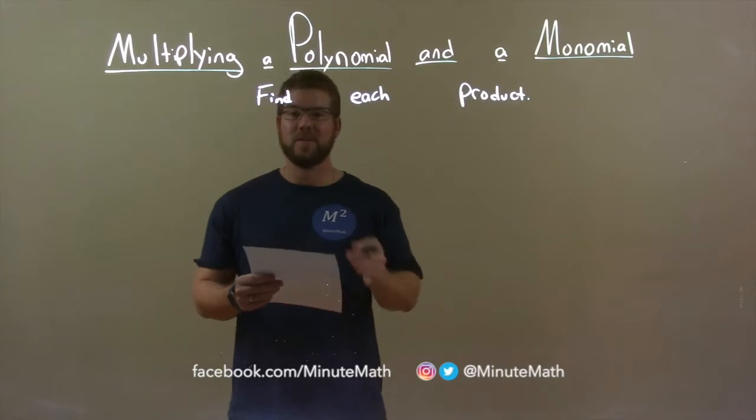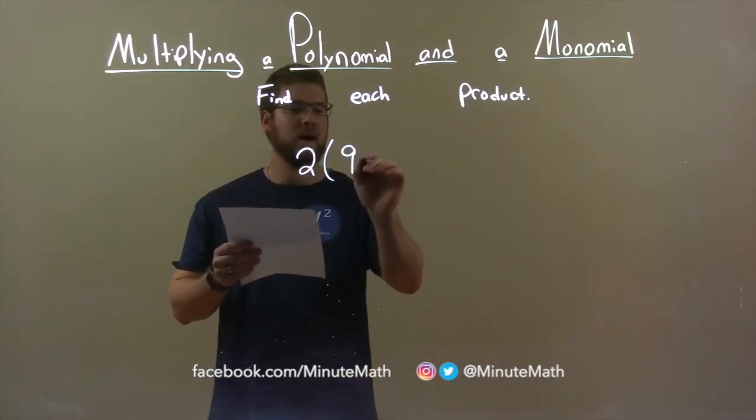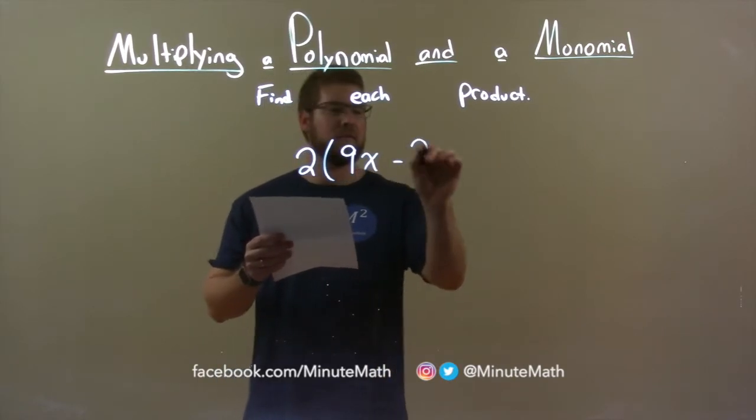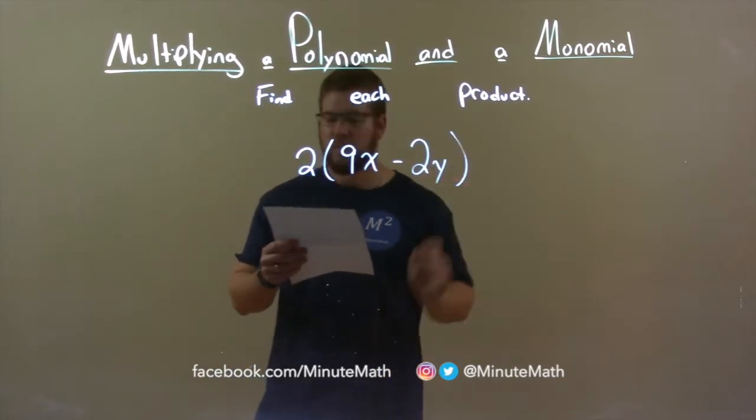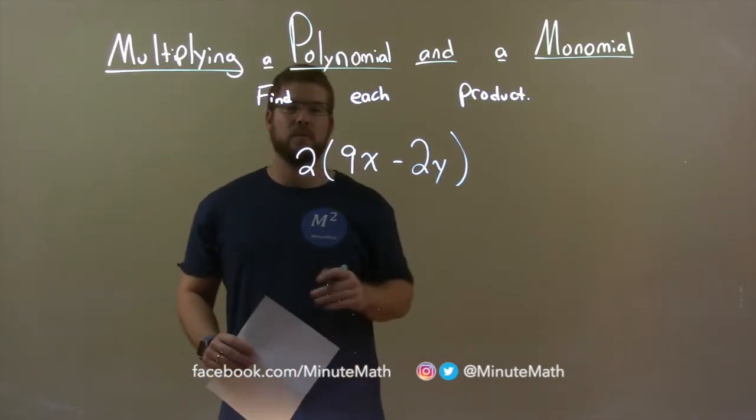So if I was given this product 2 times 9x minus 2y, I want to first distribute the 2 to both terms within the parentheses.